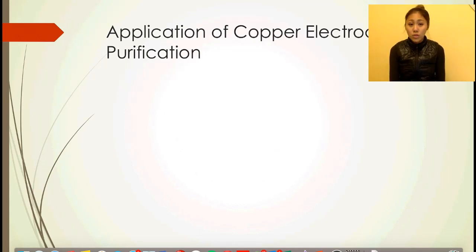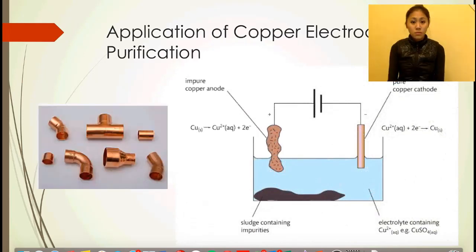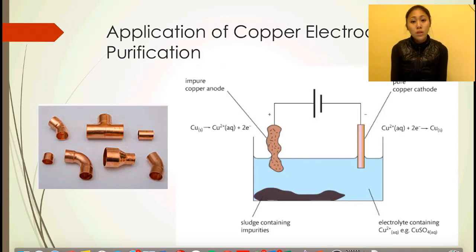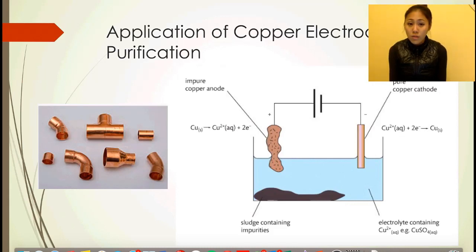The application of copper electrodes is essentially purification of copper. We start with an impure copper anode — the oxidation releases Cu²⁺ and two electrons, which move from the anode to the cathode and deposit as pure copper solid onto the pure copper cathode. This gives us the purification of copper through the transfer of electrons and Cu²⁺ ions from anode to cathode.